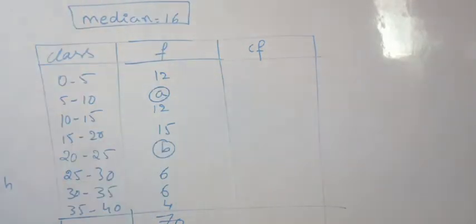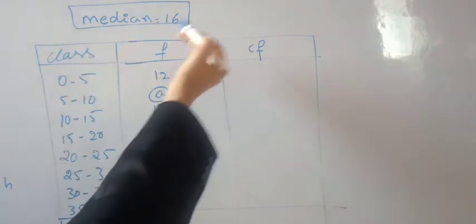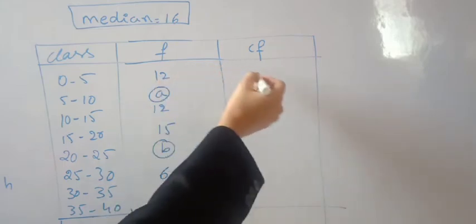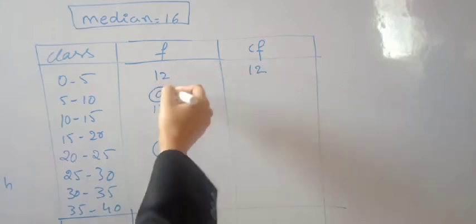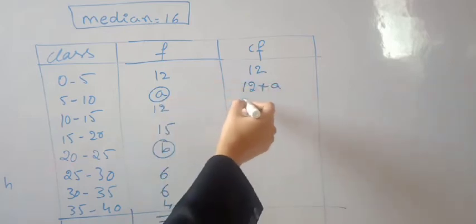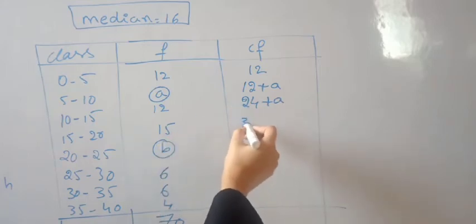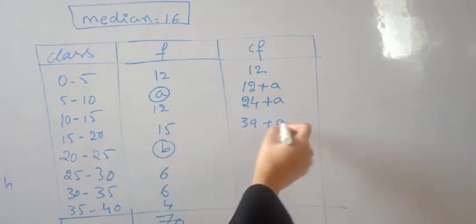To find the frequencies, we'll use the median formula. First, we need cumulative frequency (cf). Starting the cf: 12, then 12+A, then 12+12 = 24+A, then 15+24 = 39+A.